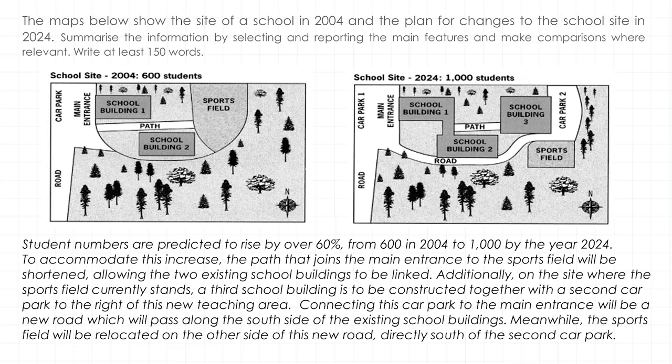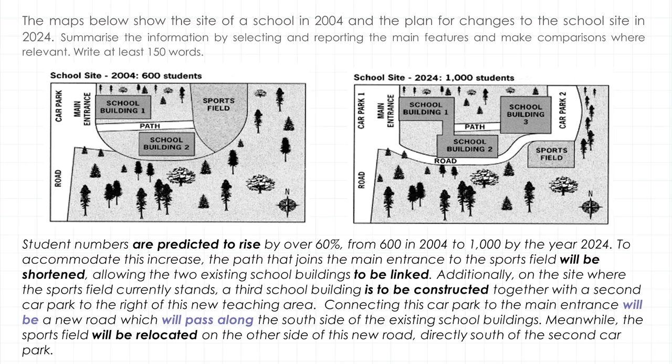We can use several verb forms to talk about the future: the future simple — will be, will pass along. There are also a lot of passive structures, because we are emphasizing changes that will be made and it's not important who will make them: will be shortened, will be relocated. But there are also verbs in the present when we know that something has already been planned: are predicted to rise, is to be constructed.